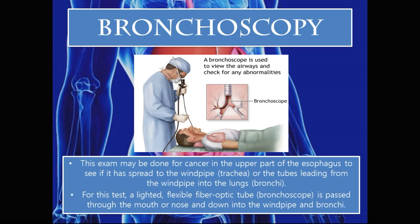Bronchoscopy: A bronchoscope is used to view the airways and check for any abnormalities. This exam may be done for cancer in the upper part of the esophagus to see if it has spread to the windpipe (trachea) or the tubes leading from the windpipe into the lungs (bronchi). A lighted flexible fibre-optic tube called a bronchoscope is passed through the mouth or nose and down into the windpipe and bronchi.